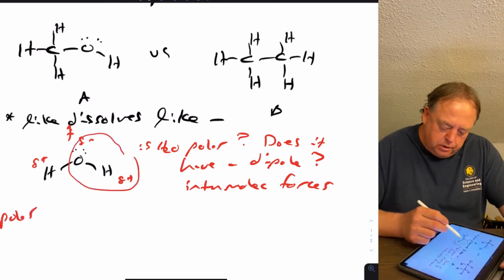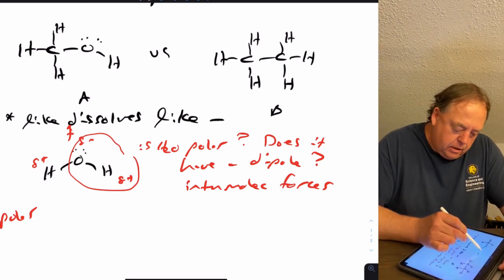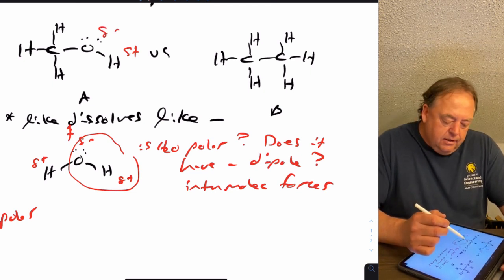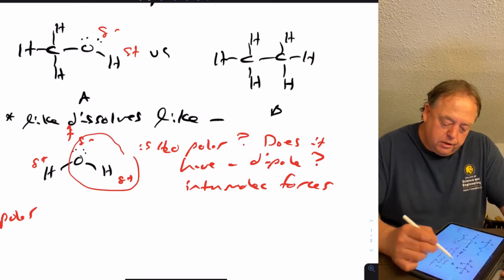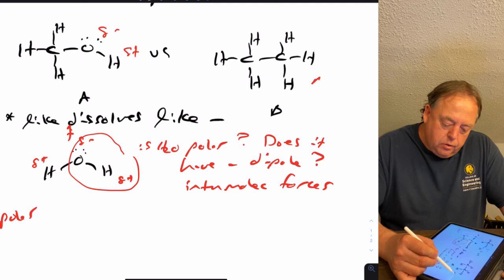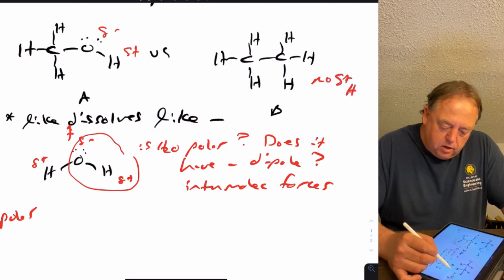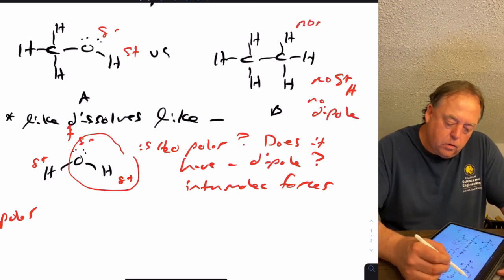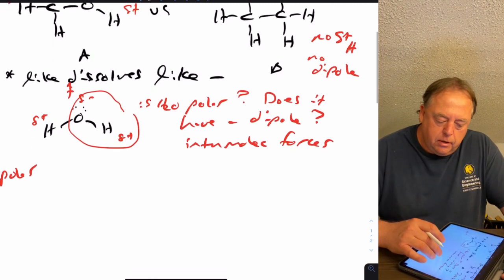Going back to molecules A and B: molecule A has a partial positive hydrogen and partial negative oxygen, so it's polar and can make hydrogen bonds. Molecule B has no partial positive hydrogen because all hydrogens are on carbon, giving it basically no dipole — it's very nonpolar. So molecule A is going to be more water soluble than molecule B.